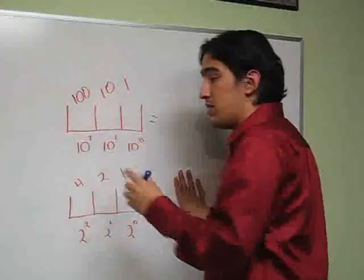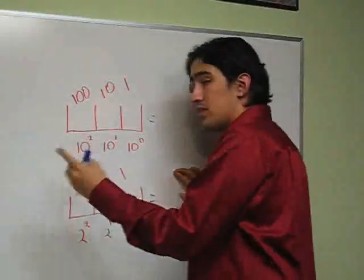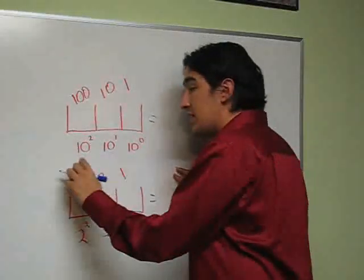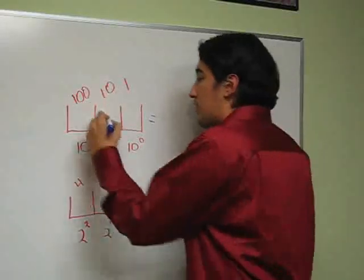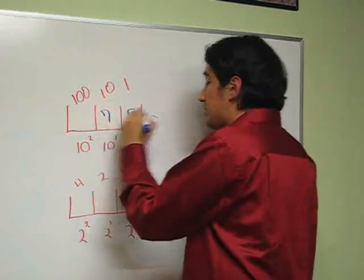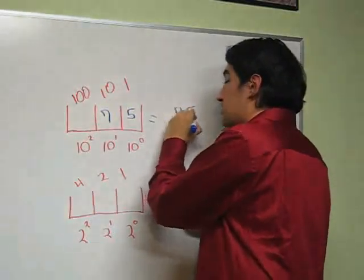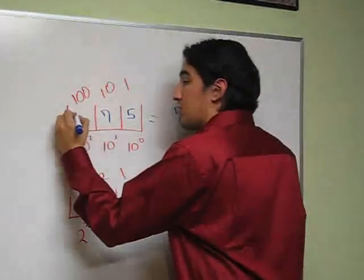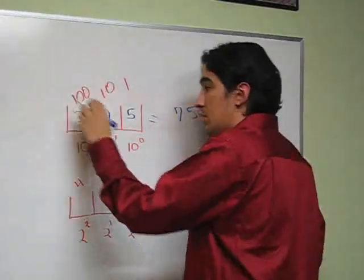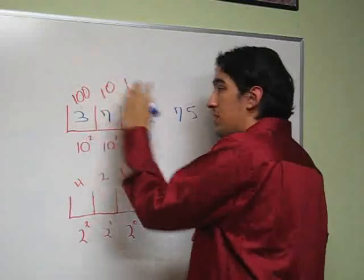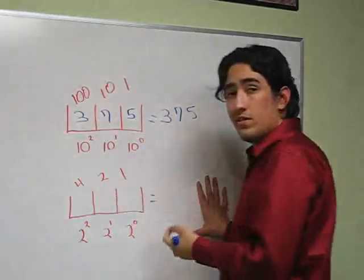In the decimal system, the one you're used to, each place is worth a different power of 10, which means each place is worth 10 times as much as the previous one. So if I put a 7 in the tens place and a 5 in the ones place, the number I have is just 75. If I add a 3 in the hundreds place, I would have 300 plus 70 plus 5 equals 375.